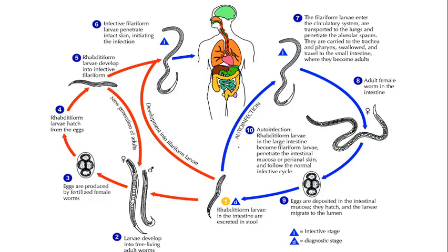Now, how does one get infected with this parasite? It usually starts when an individual is walking barefoot in soil contaminated with the microscopic filariform larvae — our infective stage. It burrows through both the epidermis and the dermis of the skin into the vascular supply. Once it reaches the vascular supply, it makes its way through the heart, which pumps it out to the lungs.